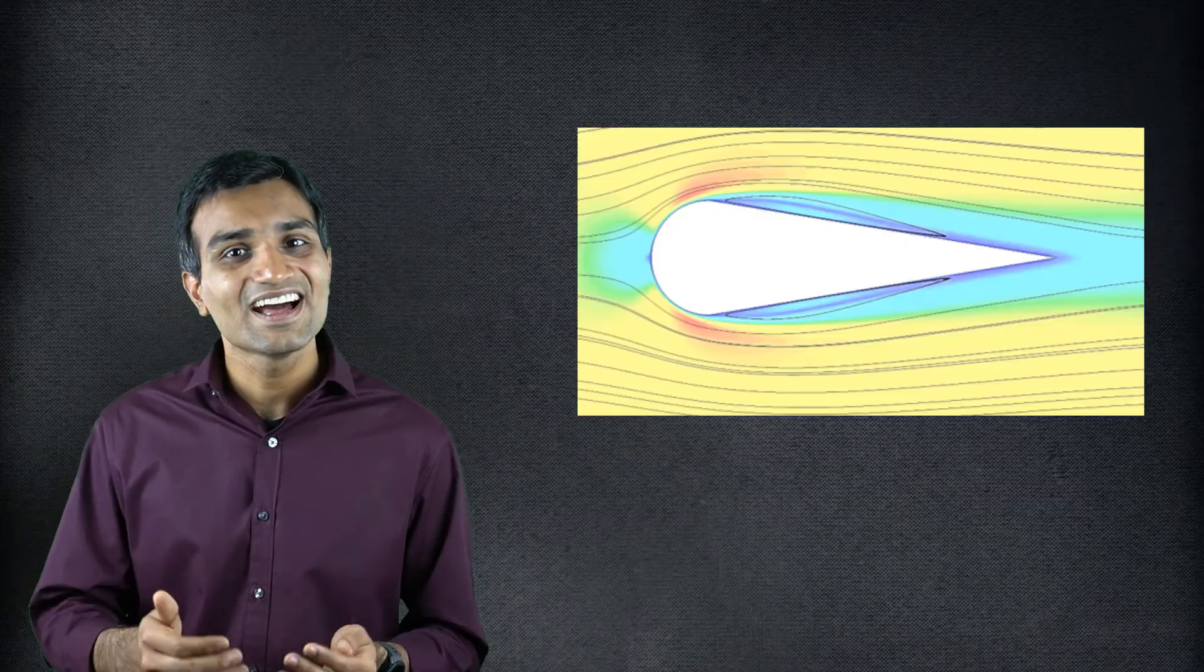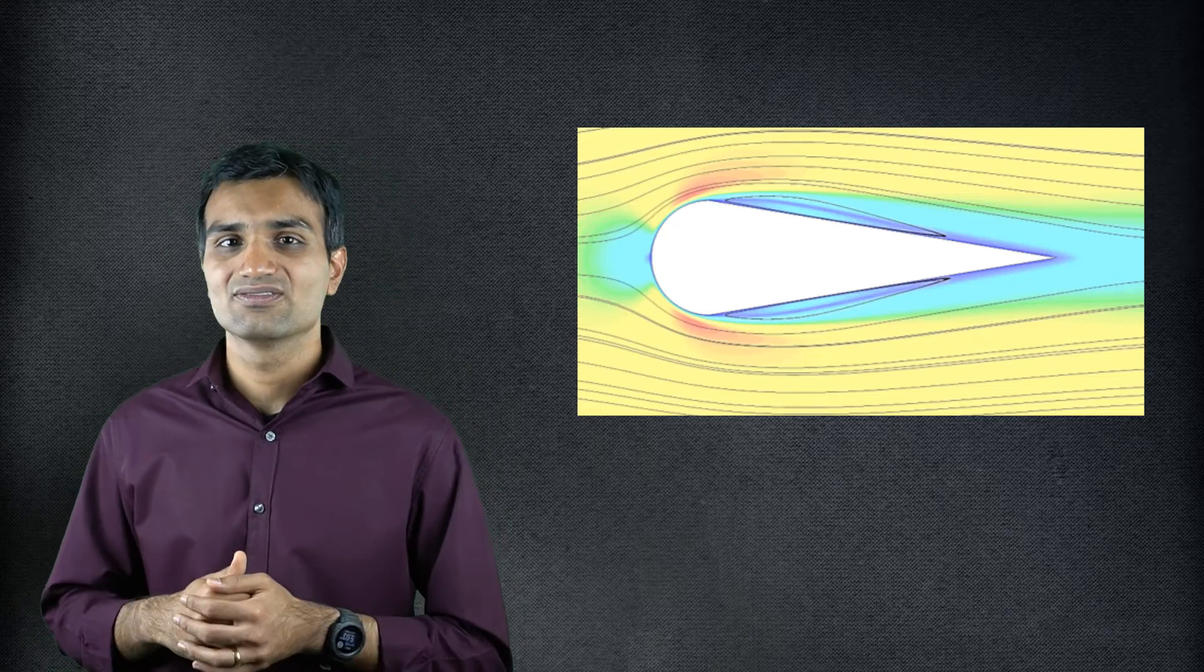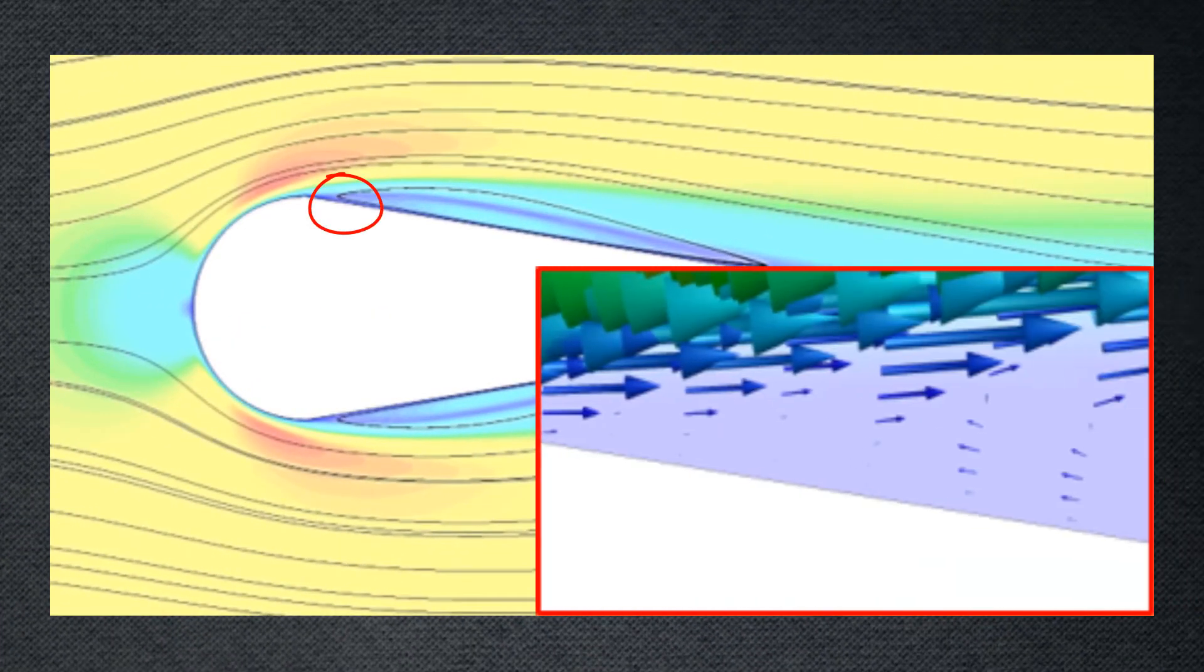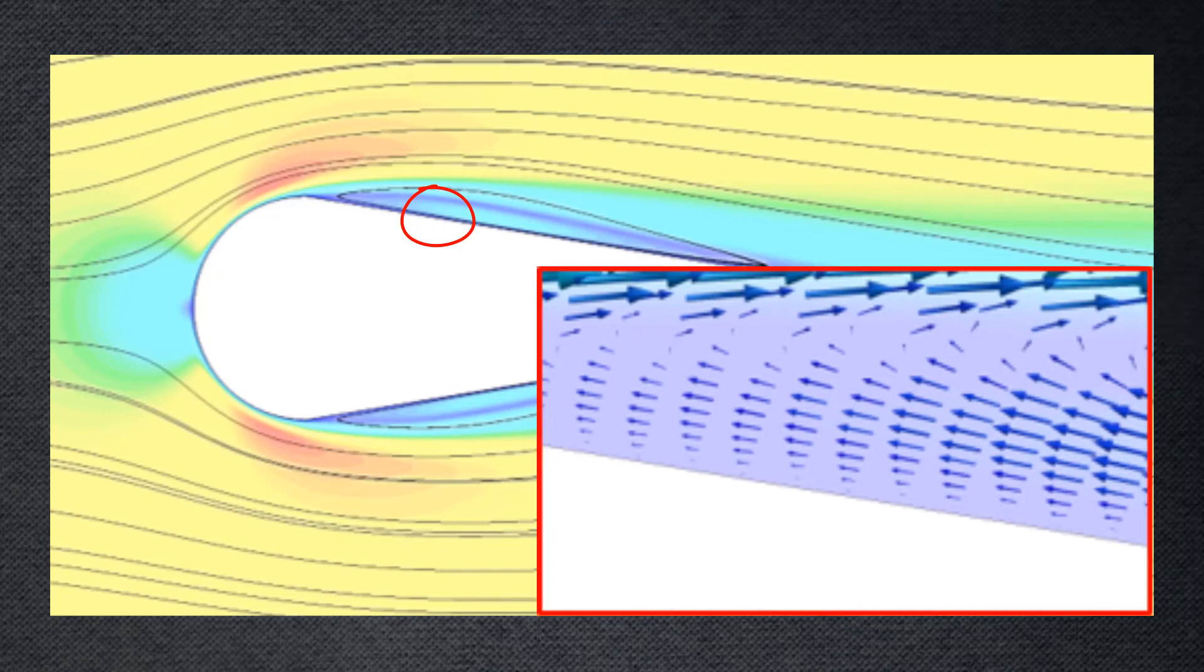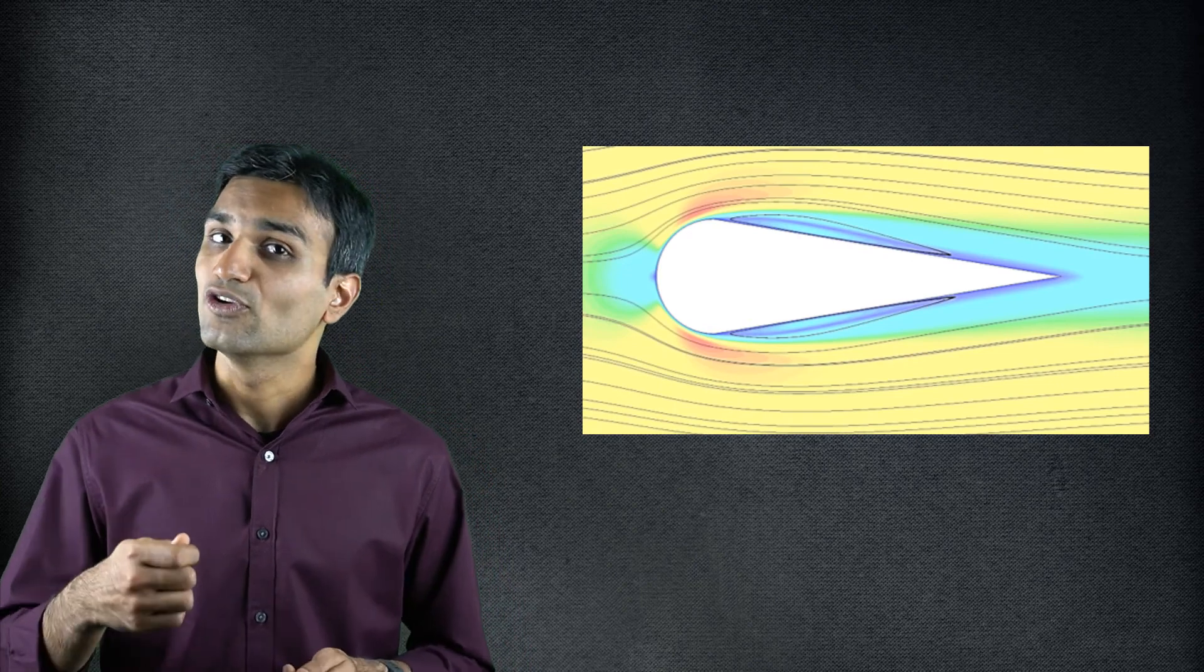In certain flow scenarios, the separated flow reattaches back to the surface. This happens primarily when the effect of adverse pressure gradient, which was originally responsible for separation, dies out and a favourable pressure gradient returns in the flow configuration. However, the return of favourable pressure gradient sometimes is not sufficient. When the separated portion transitions from laminar to turbulent, the flow tends to reattach. This happens because turbulent flows have larger momentum to overcome these adverse pressure gradients, thereby leading to flow reattachment.